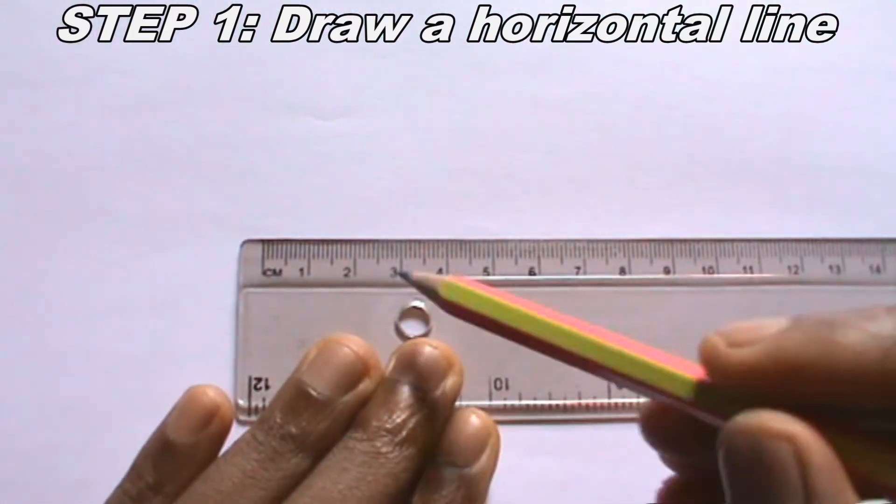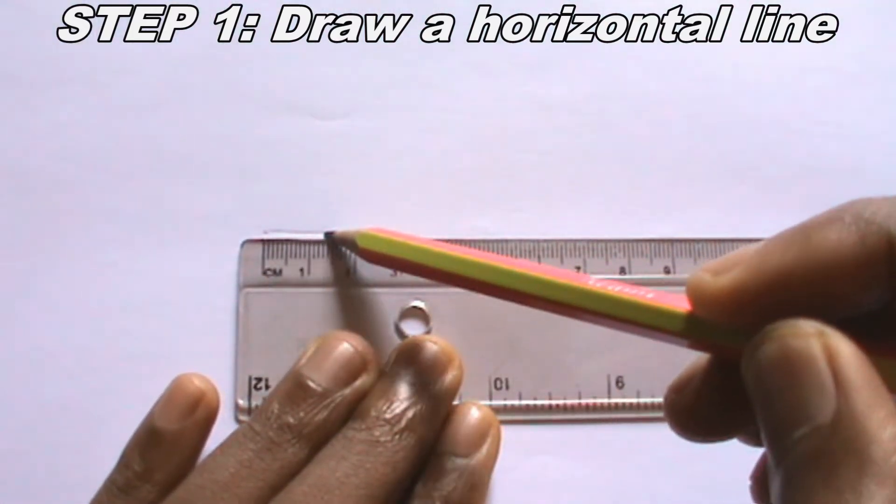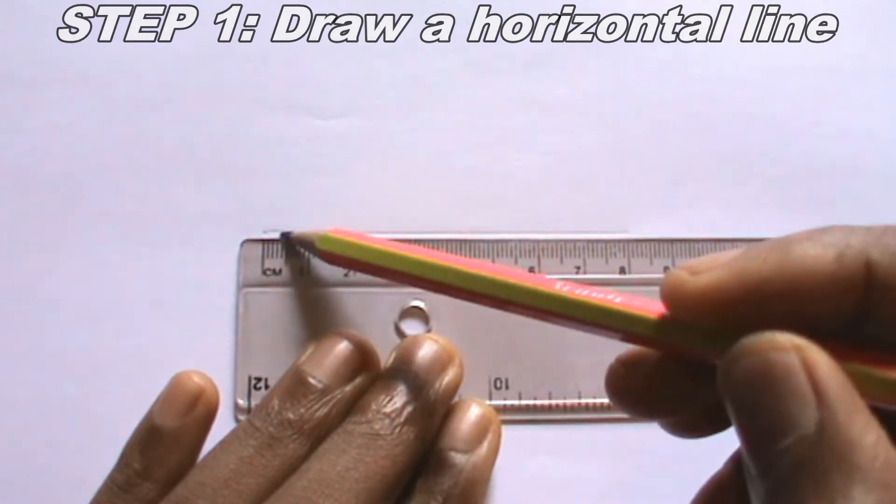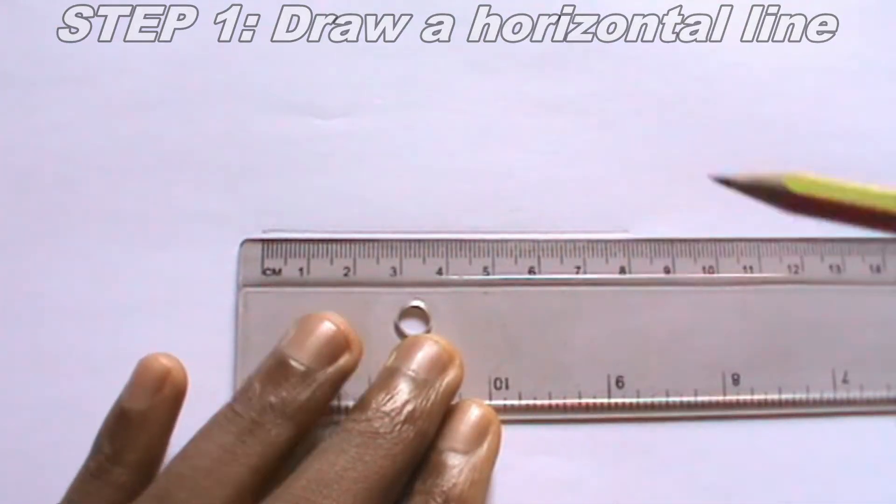To draw an ellipse using approximate circle method, the first step to take is to draw a horizontal line. This step is quite simple. I will draw the horizontal line using my ruler and a thin pencil.